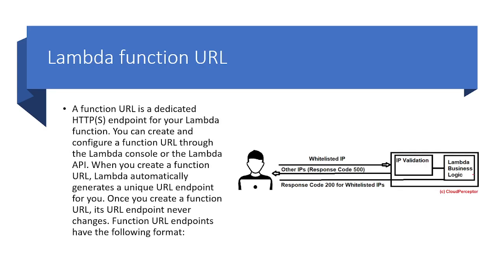A Lambda function URL is a dedicated HTTPS endpoint for your Lambda function. You can create and configure a Lambda function URL using the console or the Lambda API. When you create a function URL, Lambda automatically generates a unique URL endpoint for you. Once you create a function URL, its URL endpoint never changes.